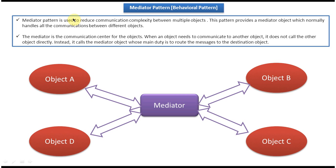Now if you read these explanations, you can understand clearly. Mediator pattern is used to reduce communication complexity between multiple objects. This pattern provides a Mediator object which handles all communication between the different objects — Object A, B, C, and D. The Mediator is the communication center; objects do not call each other directly, but instead call the Mediator, whose duty is to route messages to the destination. For example, if Object A wants to send a message to Object C, Object A sends it to the Mediator, and the Mediator routes it to Object C.